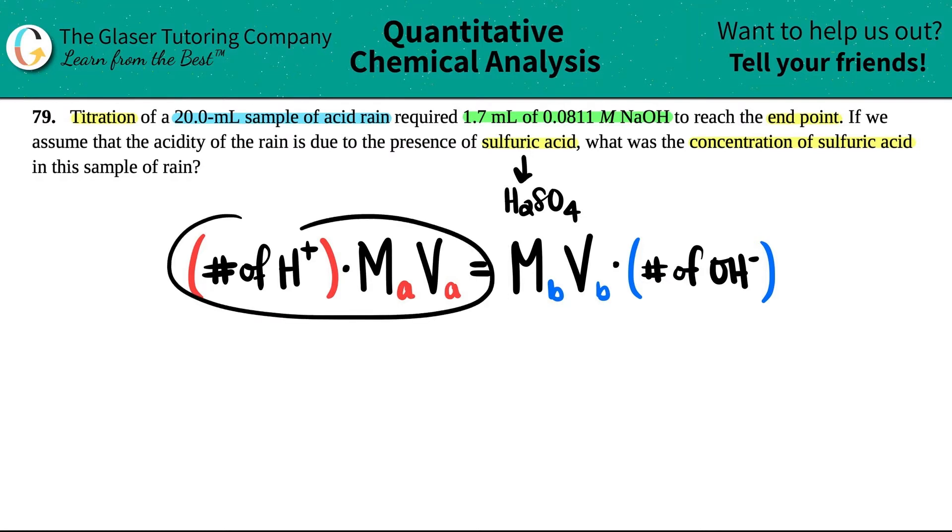This side is for acids, A for acid, and the other side, the Bs, stand for the bases. So it's the molarity of the acid times the volume of the acid, which will equal the molarity of the base times the volume of the base. However, there's a catch. For your acid, you have to multiply by the number of H pluses that you see in your acid, and for the base side, you multiply by the number of OHs that are in the base.